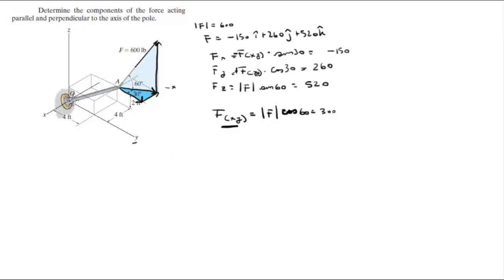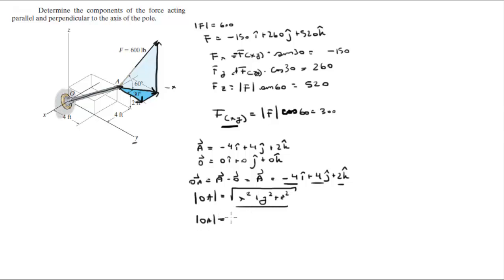Now we need to find the vector OA. To do that we need to find the position vector of all the points involved first. A sits at negative 4i plus 4j plus 2k, and O sits at the origin, 0 plus 0j plus 0k. So the point that goes from O to A is A minus O, but O is 0 so it's the same as A: negative 4i plus 4j plus 2k. The magnitude of OA is found by taking the square root of the components squared, which equals 6 exactly.